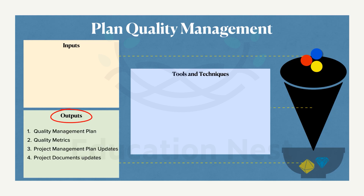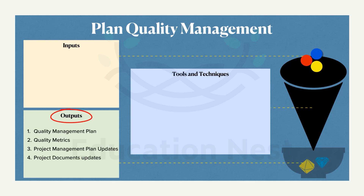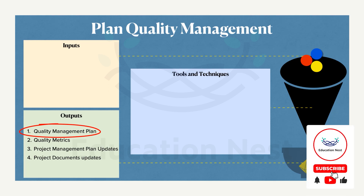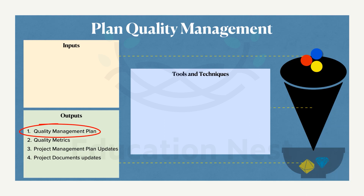Starting with the outputs, we have the Quality Management Plan. As you can see, this is a component of the final project management plan. We have 10 components in the final project management plan, and the quality management plan is one of those 10 components. Through this process, we create a quality management plan.